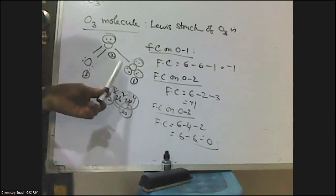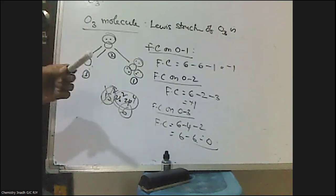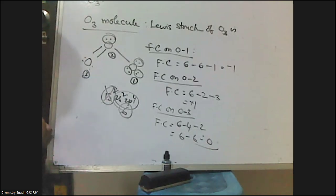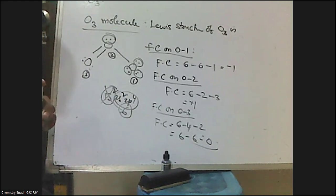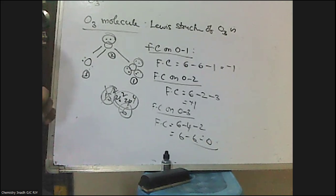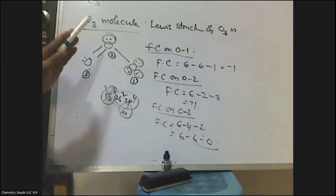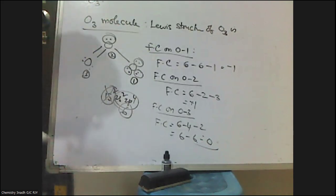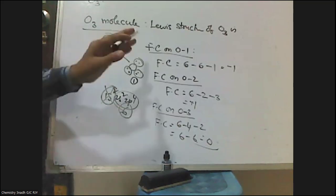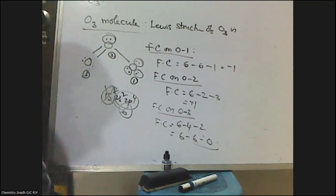This is how to calculate the formal charge on each atom present in a molecule or polyatomic ion. Formal charge = (number of valence electrons on the atom) − (number of unshared electrons on the atom) − (number of bonds around the atom). This is one of the important topics from an objective point of view, particularly for EAMCET, JEE Mains, and NEET. Thank you for watching Trenad Chemistry Classes — please like, share, and subscribe to the channel.